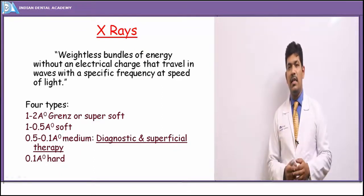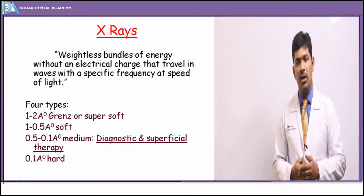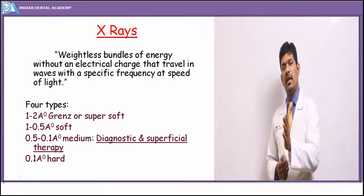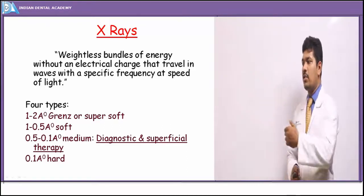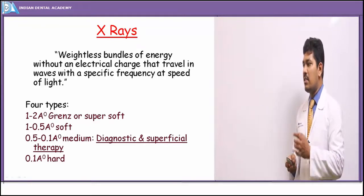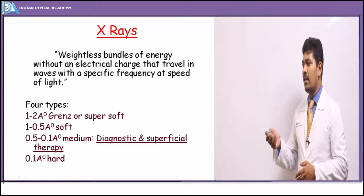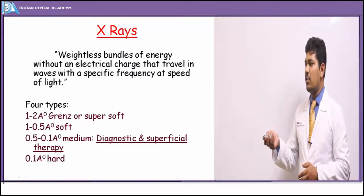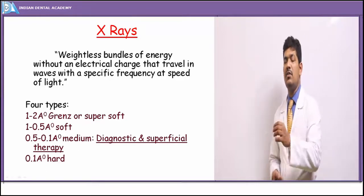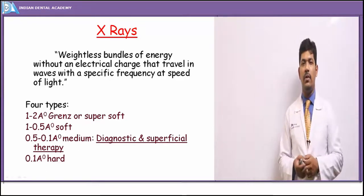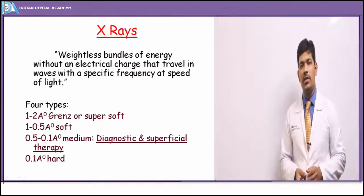There are four types of x-rays depending on their frequency and wavelength. X-rays falling in the third category — between 0.5 to 0.1 angstroms — are the most useful for dental practice and from the medical point of view, being most useful for both diagnostic as well as superficial therapy purposes.